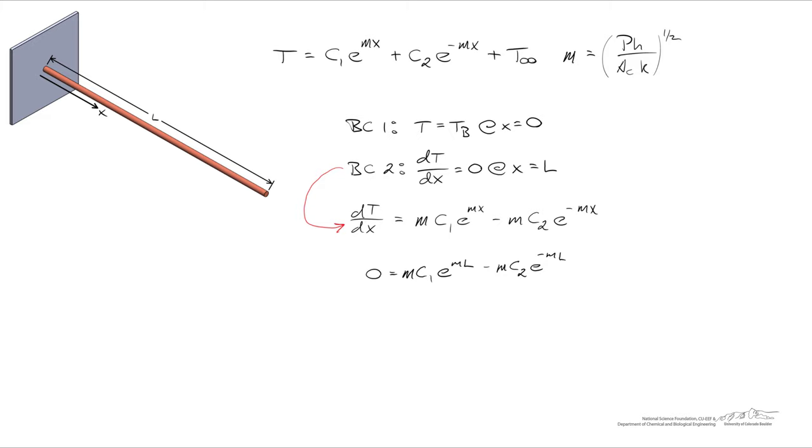So let's apply the second boundary condition to this equation, where dT/dx is equal to zero at x equals L. Here I replace x with L in both of the exponentials and set that equal to zero. A little bit of algebra allows us to solve for C1 as a function of C2, dividing out by m,